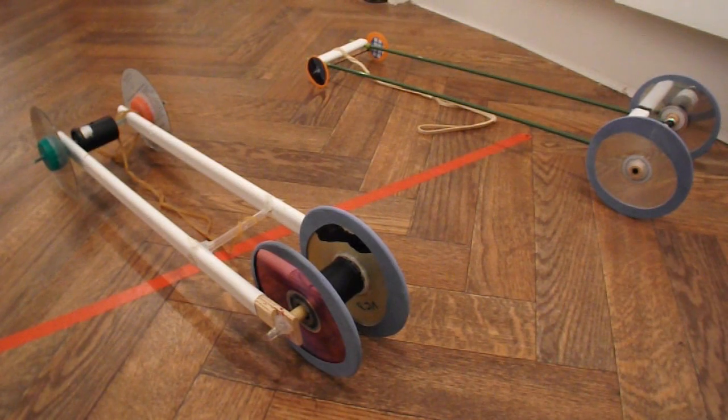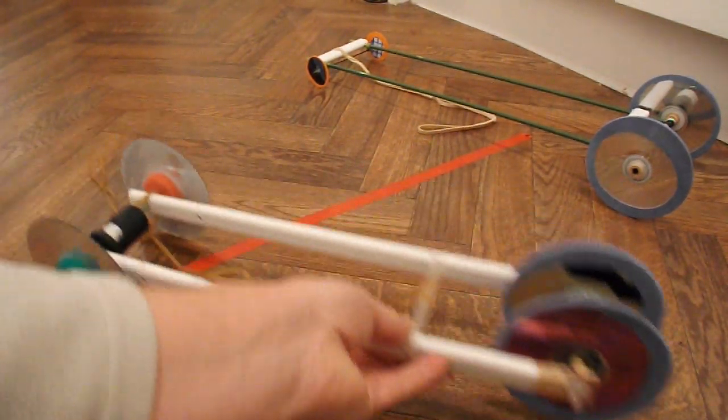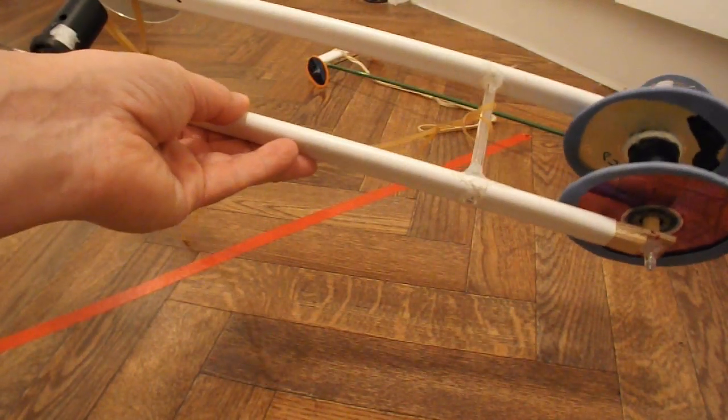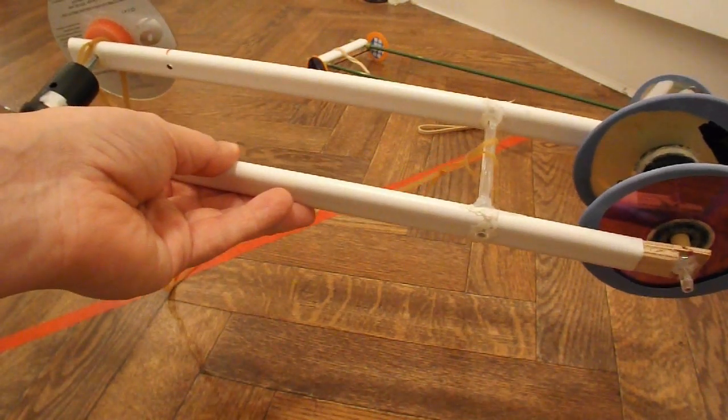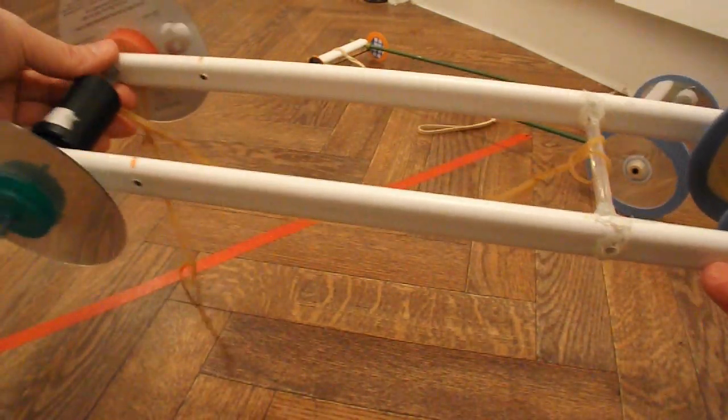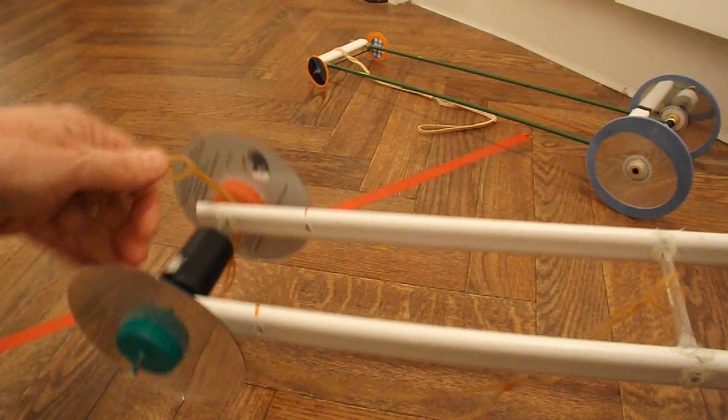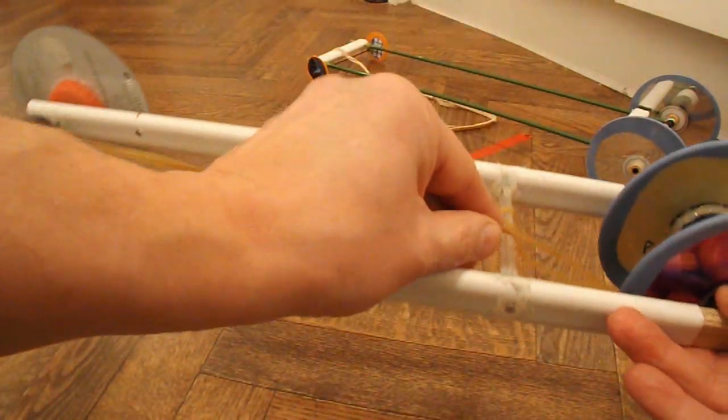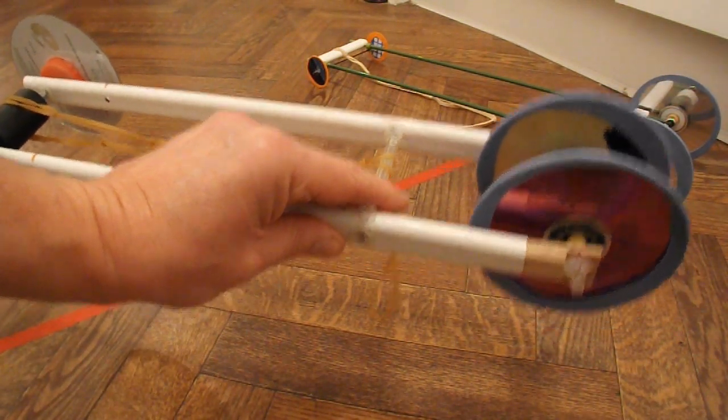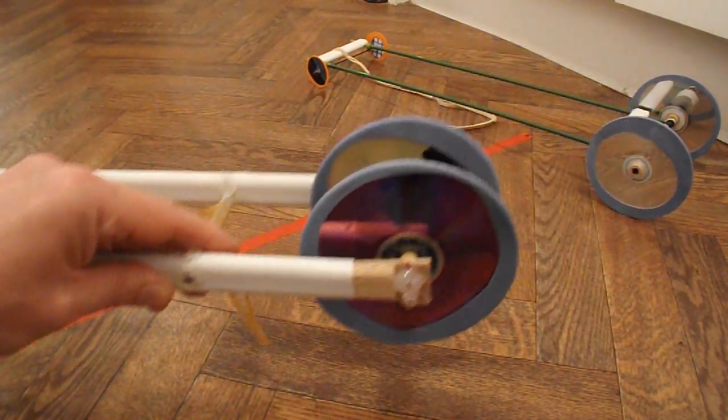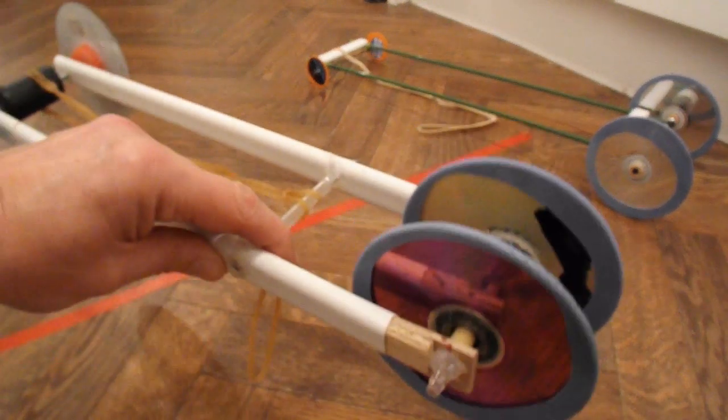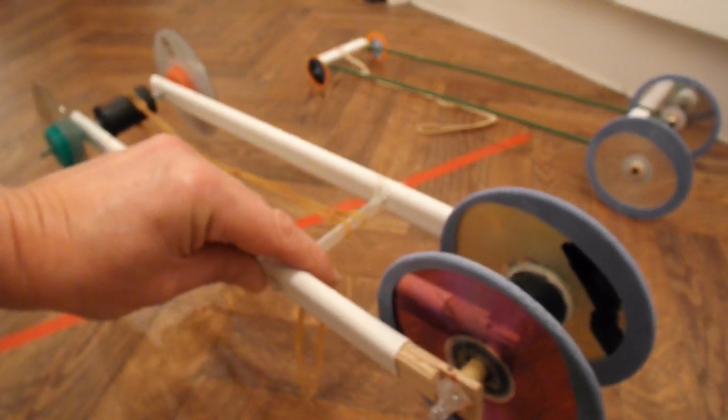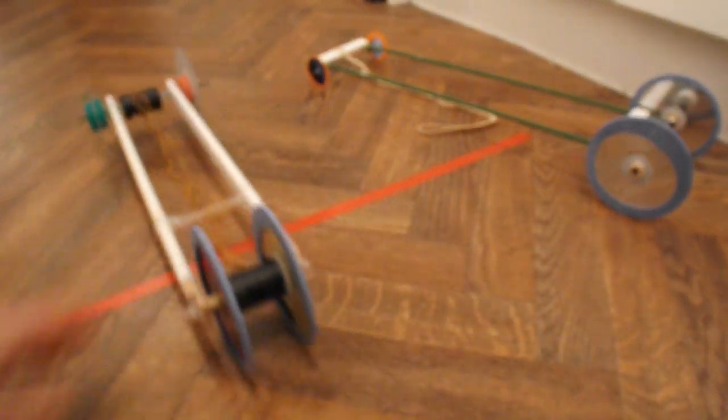Number one was never designed to be a fast car. It was designed to go longer distance by being able to double the length of rubber band it carried. And on a longer run, I think this one would have beaten the new boy simply because it was able to keep itself powered for a longer distance.